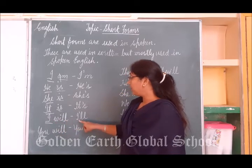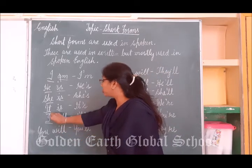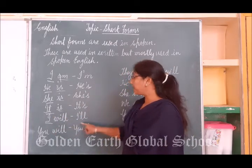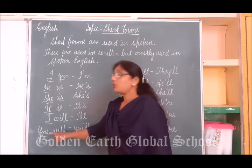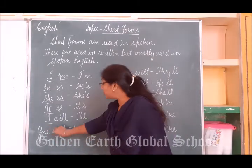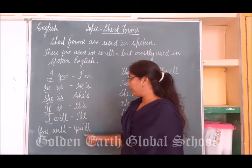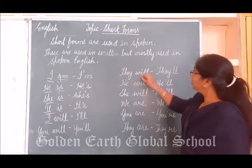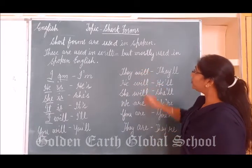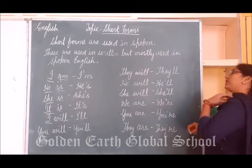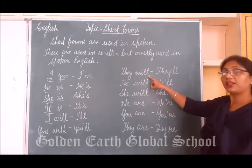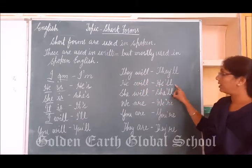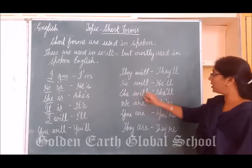'I will' — here we are going to drop two letters: 'w' and 'i', so 'I will' becomes 'I'll'. 'You will' — drop both those two letters, 'you will' becomes 'you'll'. 'They will' — drop the 'w' and 'i', so 'they will' becomes 'they'll'. 'He will' becomes 'he'll'. 'She will' becomes 'she'll'.